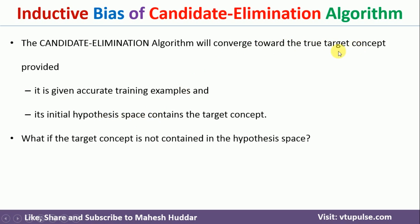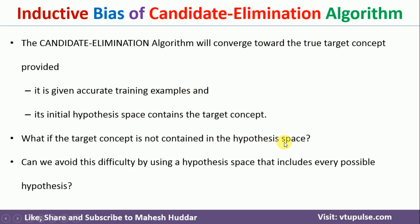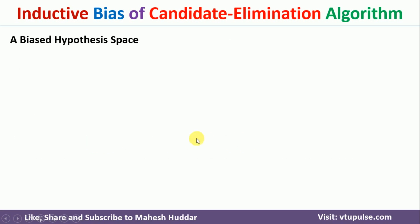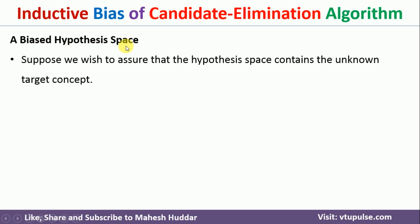Now, what if the target concept is not present in the hypothesis space? If the target concept is not present in the hypothesis space, such a hypothesis space is called a biased hypothesis space. The question is: how do we convert this biased hypothesis space into an unbiased hypothesis space?